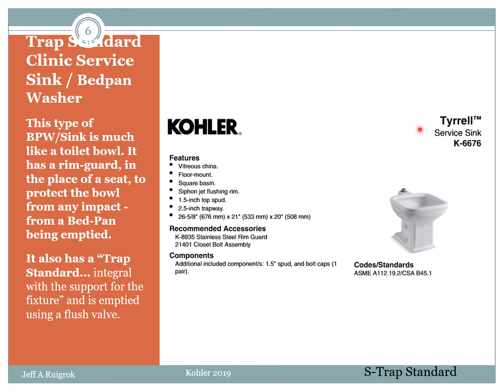These are the specs for that fixture — they call it a service sink. Remember that this particular fixture is the same as the toilet, and then it has a little splash zone and then the S-trap. When you're talking trap standards such as this, you don't draw the S-trap or the trap standard on a drawing. So the piping on something like this — you wouldn't see the red part, just the green part — the pipe going off, maybe with the vent coming up. The piping would stop right there.